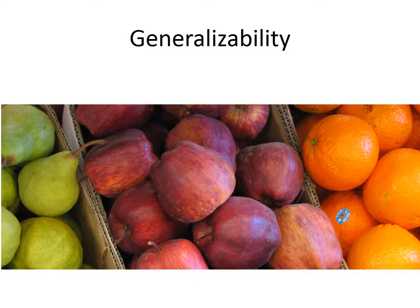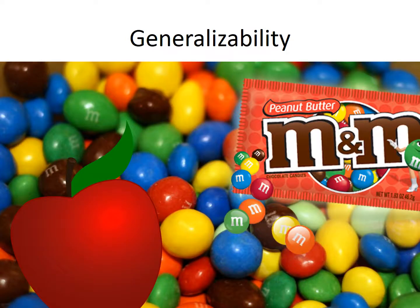Have you ever heard the phrase, it sounds like comparing apples to oranges? Generalizability asks if we're trying to take data from apples to draw conclusions about oranges, or vice versa. The group we obtain data from is a sample, and the group we're drawing conclusions about is the population. So generalizability asks: does the sample accurately represent the population it was intended to represent?